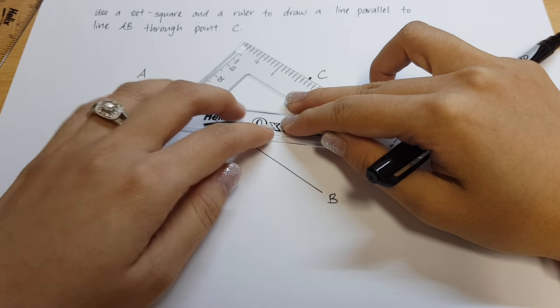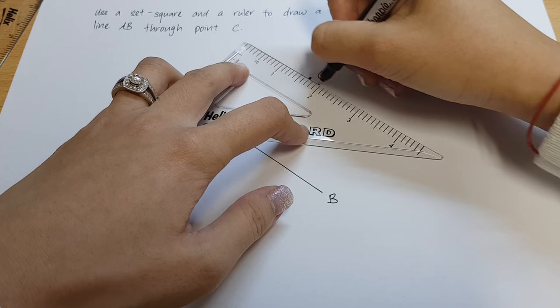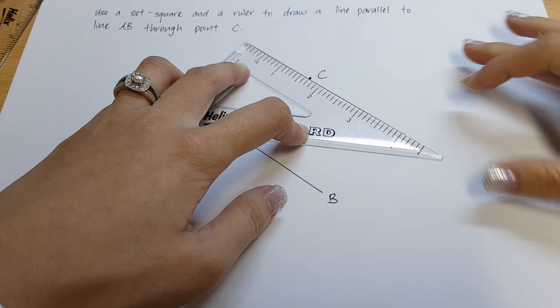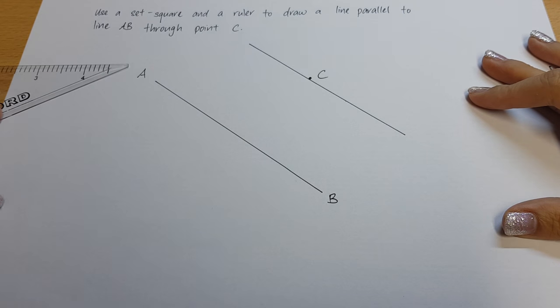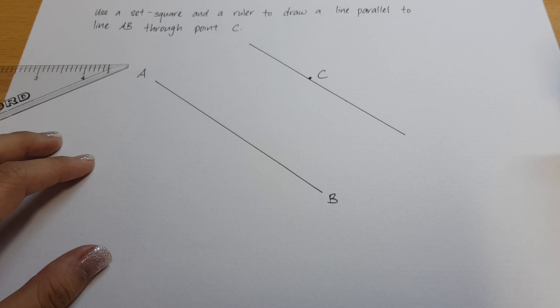Now, we move the ruler and draw the line. This is how we achieve parallel lines. Thank you for watching. Goodbye.